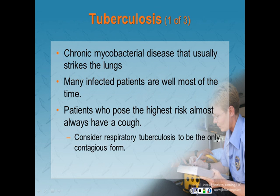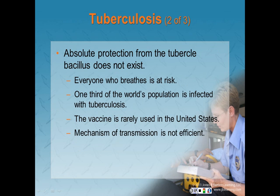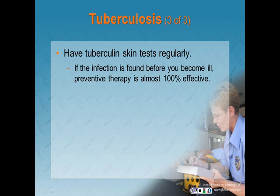Tuberculosis is a chronic mycobacterial disease that usually strikes the lungs. Many infected patients are well most of the time. Primary TB is disease that occurs shortly after infection. Reactive TB is common and can be much more difficult to treat, especially because an increasing number of TB strains have grown to resist most antibiotics. Patients who pose the highest risk almost always have a cough. Consider respiratory tuberculosis to be the only contagious form because it is the only one spread airborne. According to the CDC, one-third of the world's population is infected with TB. If infection is found before you become ill, preventative therapy is almost 100% effective.